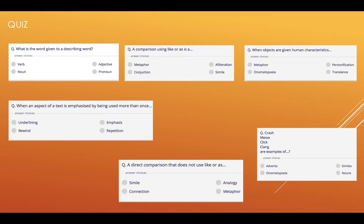So number one should be, the describing word is an adjective. A comparison using like or as, simile. Objects given human characteristics. If you chose metaphor, that's correct. If you chose personification, that's correct as well. Personification is a type of metaphor. It's when you turn a non-living thing like a rock and give it human characteristics.